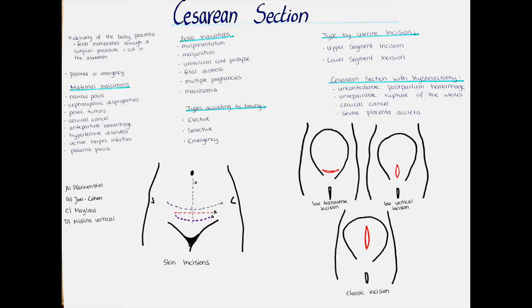There are usually no absolute contraindications to a cesarean section. However, a cesarean section is usually avoided in cases where the fetus dies intrauterinely, or where there are severe malformations or anomalies incompatible with fetal life, as well as severe cases of maternal coagulopathies or extensive scarring or pyogenic infections in the abdominal wall, such as after an extensive burn.